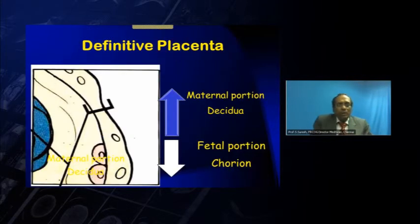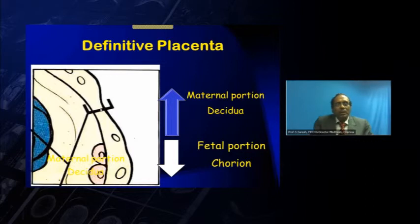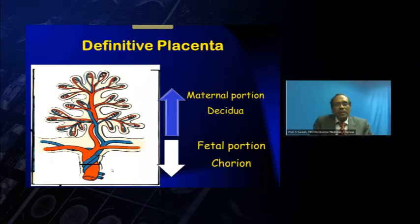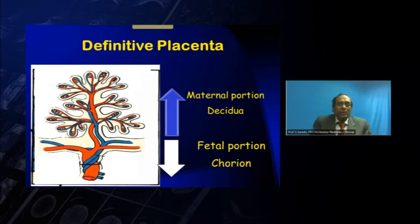When you look at the definitive placenta, we have to think of two things. One is the maternal portion, which is actually the decidua, and it will be close to the uterine wall. The other is the fetal portion, which is actually the chorion. Looking at the chorion in greater detail, its essential part is the chorionic villi — the primary stem villi, the secondary stem villi, and the tertiary stem villi. This is a typical picture of a tertiary stem villus, which shows vessels — both artery and vein.